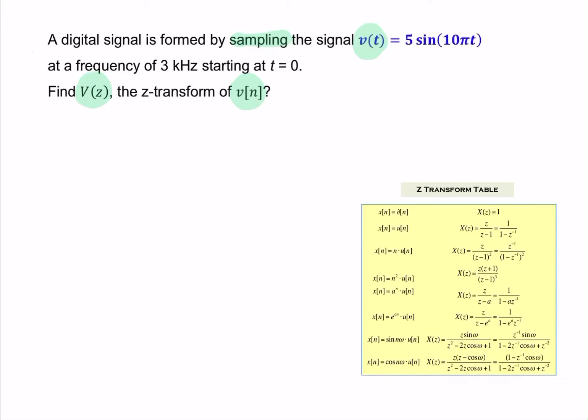So, we need to convert v(t) from continuous time to discrete time, and then change v(n) to its z-domain equivalent, v(z). This second step is simply a z-transform, and we can use the table for that.